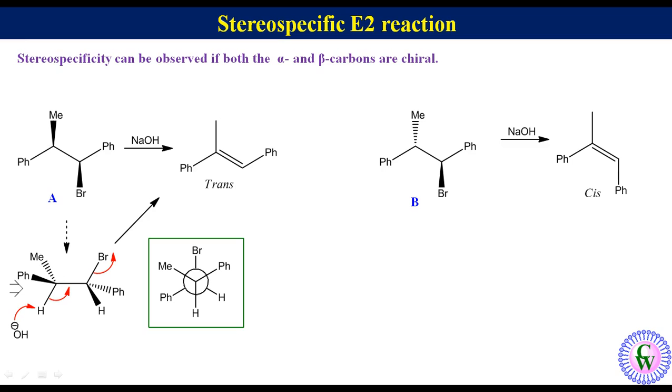Now, let's redraw diastereomer B such that H and Br are anti-periplanar and in the plane of the page. If we view from the left, its Newman projection will look like this. Suppose we are using perspective formula.